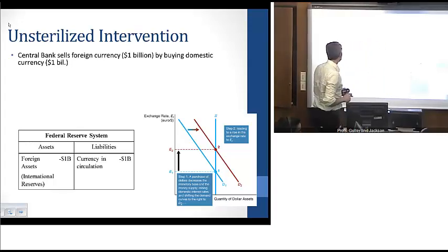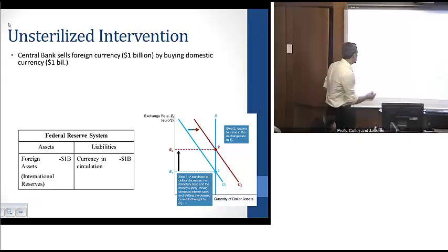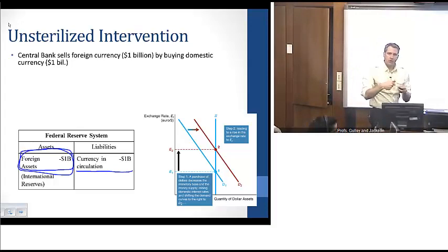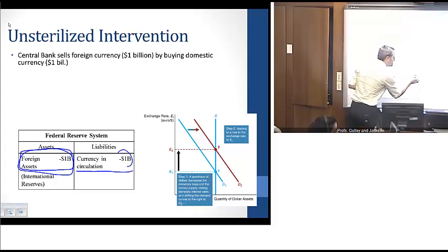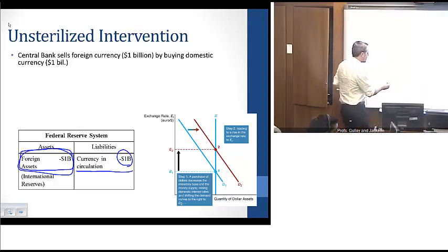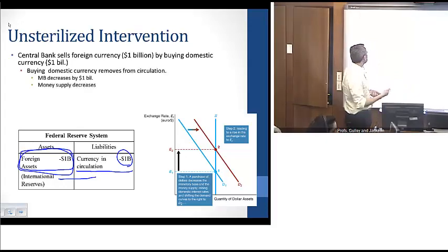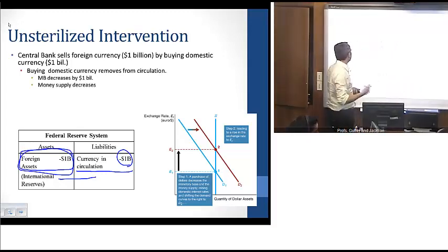If we look at the central bank's balance sheet, through this unsterilized intervention they are reducing their foreign assets — their international reserves — by a billion dollars. On the liability side, they're pulling in a billion dollars in currency that's being removed from circulation, reducing the liabilities of the Fed by a billion dollars. Assets and liabilities are balanced. The process of buying domestic currency removes dollars from circulation, and the monetary base goes down by a billion dollars.